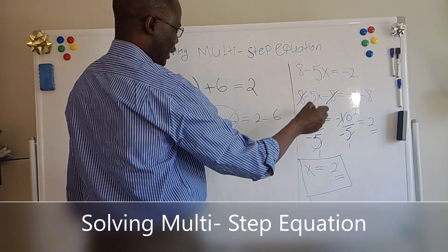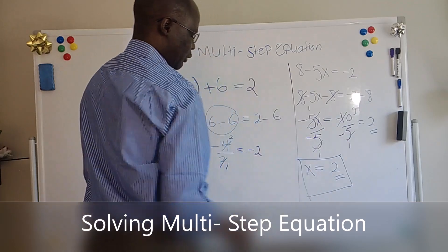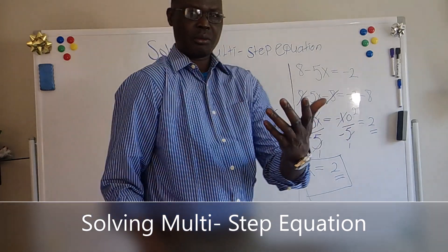And then we divide by minus 5X to both sides of the equation. And that's how we got 2. Thank you. If you have a question, let me know.